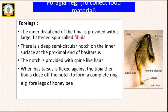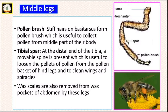The antenna cleaner notch contains spine-like hairs. When the basitarsus is flexed against the tibia, the fabula closes off this notch to form a complete ring. These hairs are responsible for cleaning or brushing the pollen from the antenna when bees keep the antenna between the notch. So the forelegs of honeybees are modified as antenna cleaner legs.